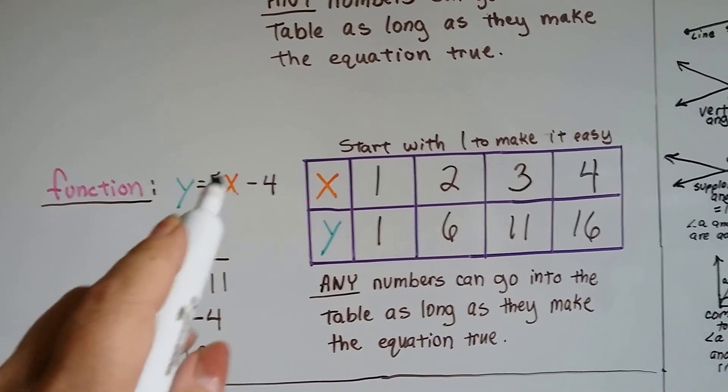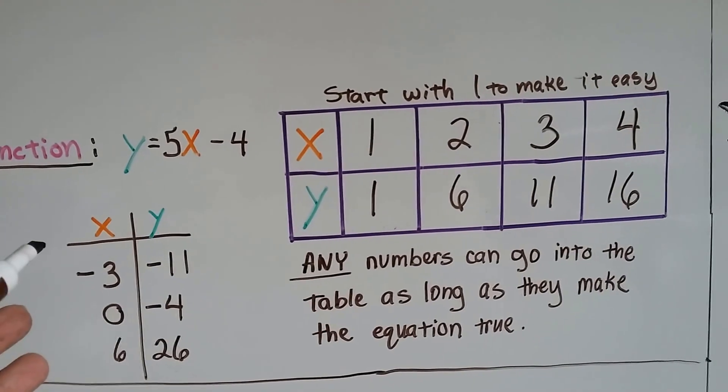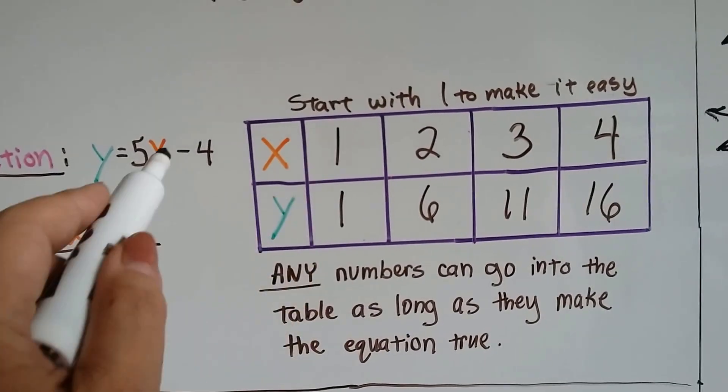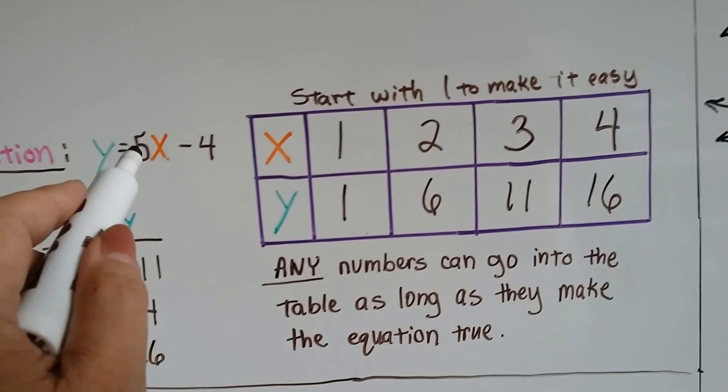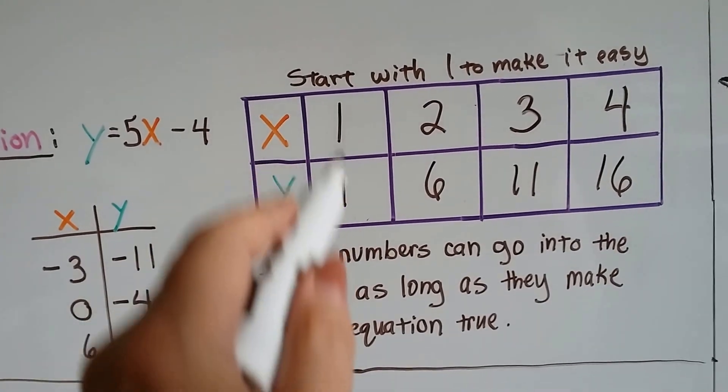If we've got y equals 5x minus 4, we can start with 1 to make it easy, and any numbers can go in here as long as it makes it true. So if x is 1, that's 5 times 1, that's 5. 5 minus 4 is 1, so it's 1, 1.